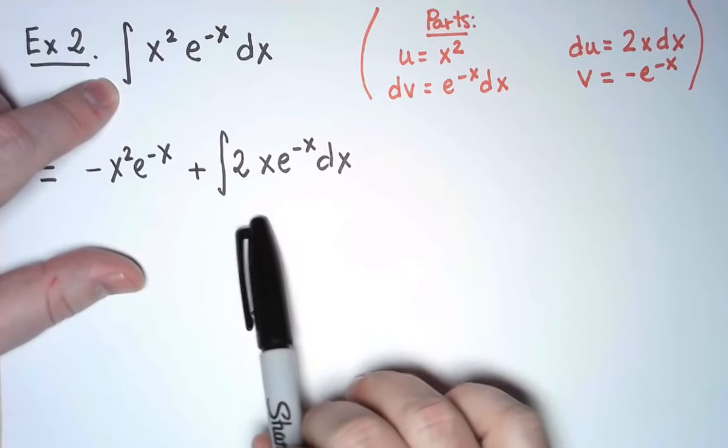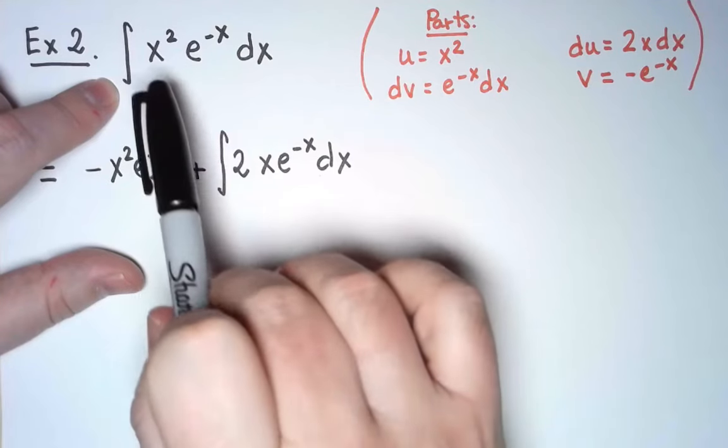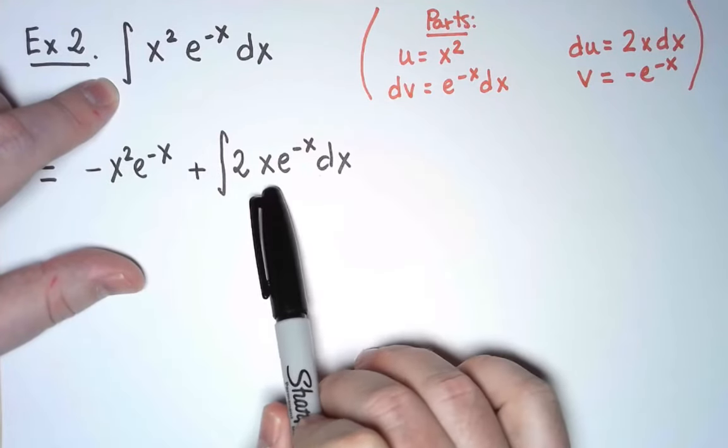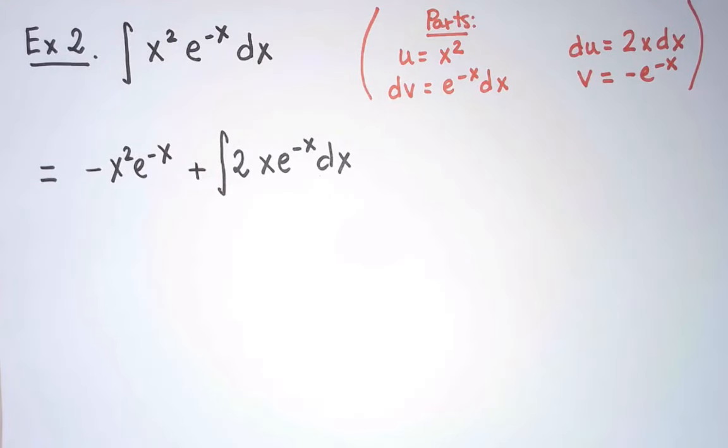Now, what do I do with the new integral? Notice that using integration by parts once took me from x squared to x, while keeping the exponential the same. So how about we use integration by parts one more time?